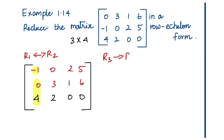R3 changes to R3 plus some multiple of R1. The first row's first non-zero element - we will convert the first column. So 4 into R1: 1 minus 1 into 4, minus 4 plus 4, minus 4, 0, 0, 1, 1, 2. So we get 1, 2, 1.